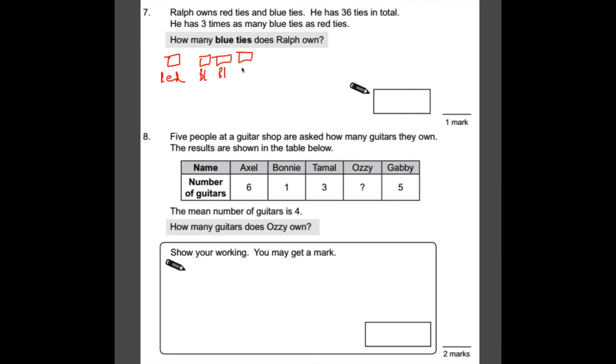Okay, blue 1, blue 2, blue 3. So these are four equal parts. So what we need to do is divide 36 ties by 4. 36 divided by 4 is 9. So each of these chunks is worth 9. He has 9 red, then he has 9, 18, 27 blue ties.